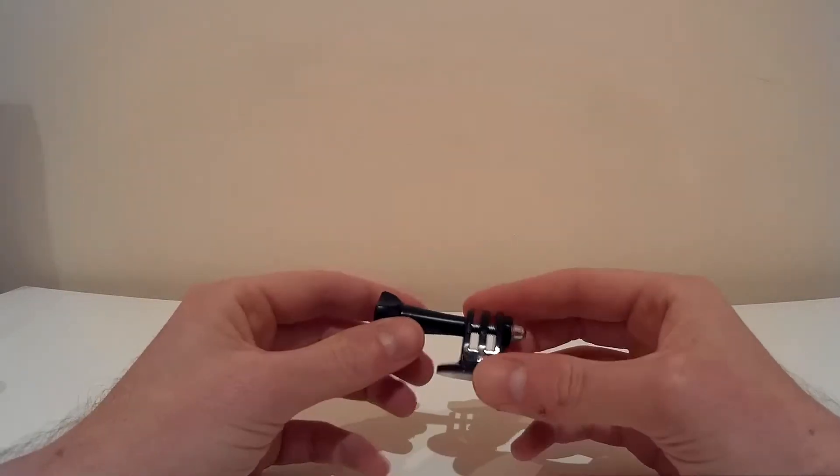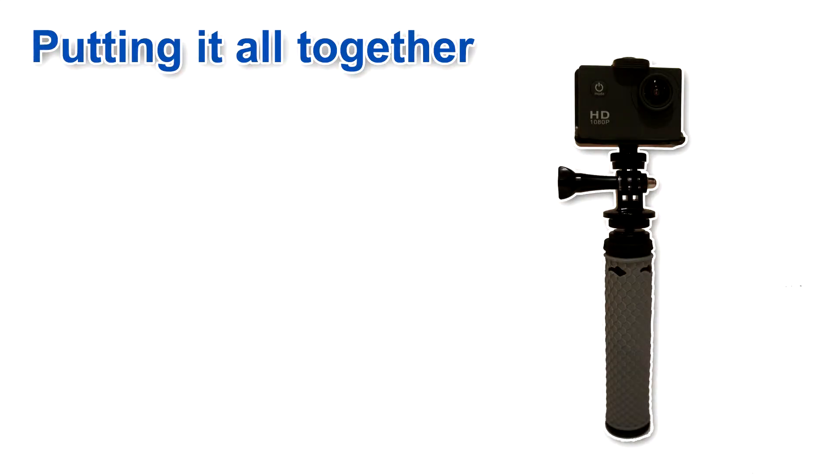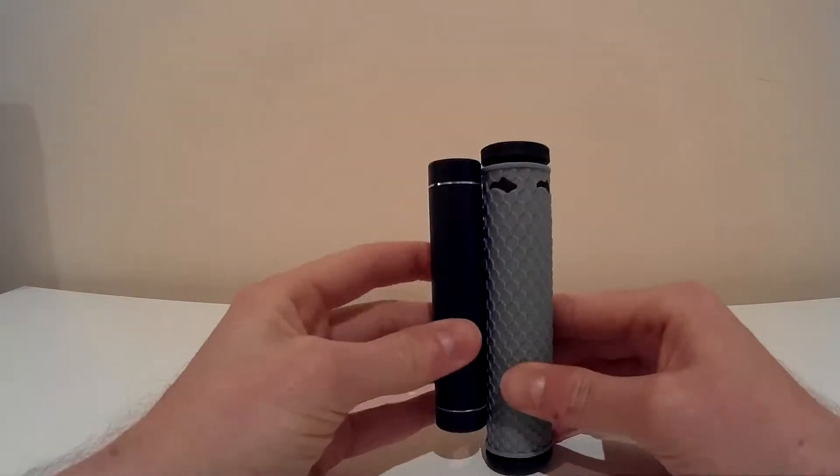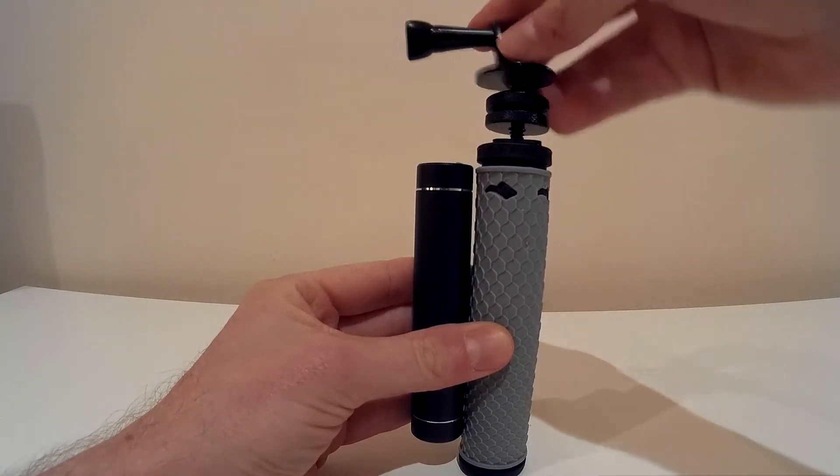And then finally we've got a GoPro tripod mount adapter. So the basic idea is take the battery, take the grip, put the bolt on top and the tripod mount attaches to that bolt.